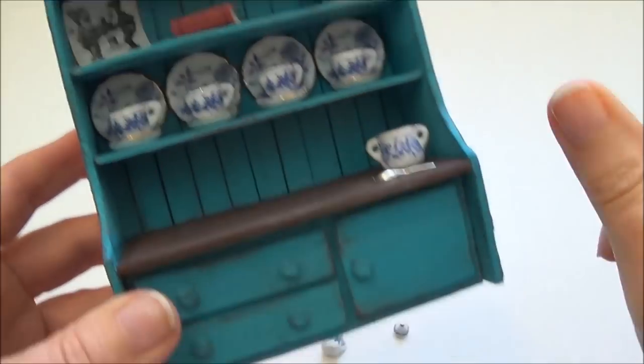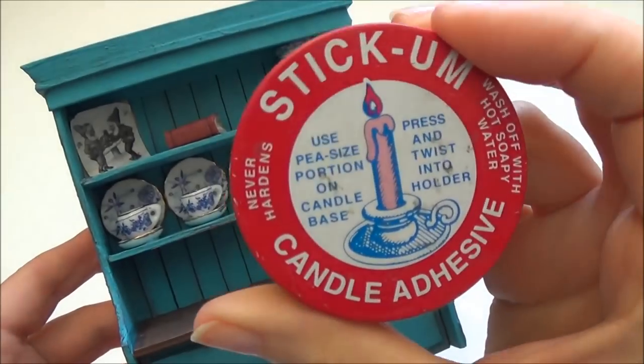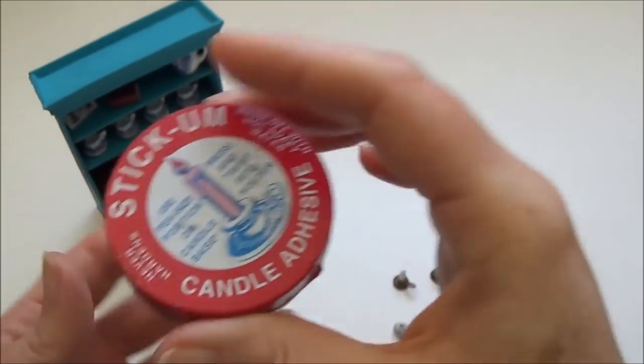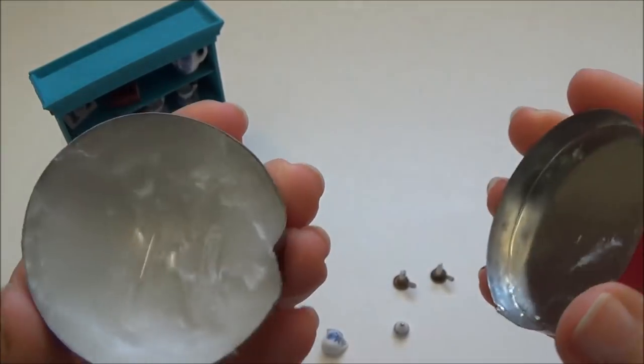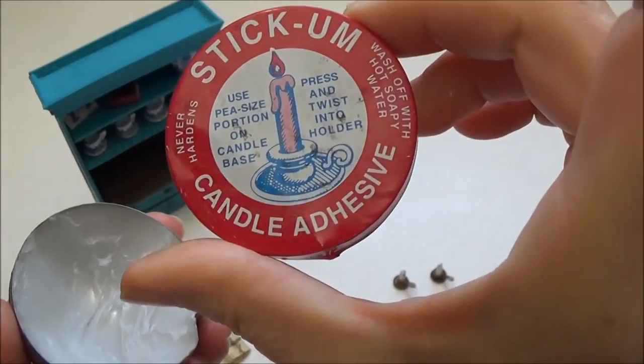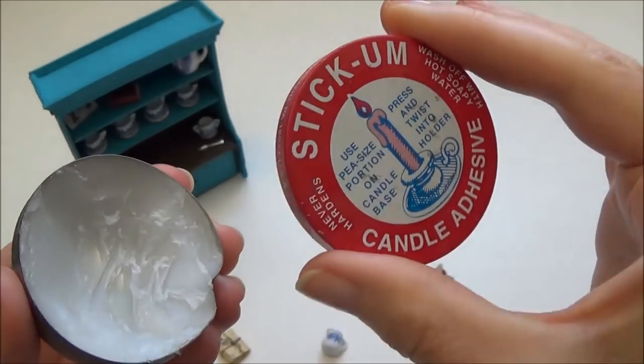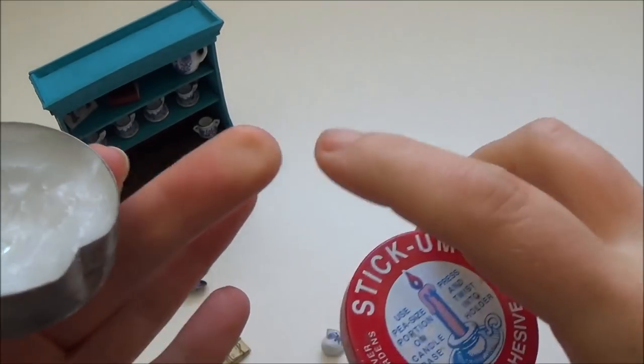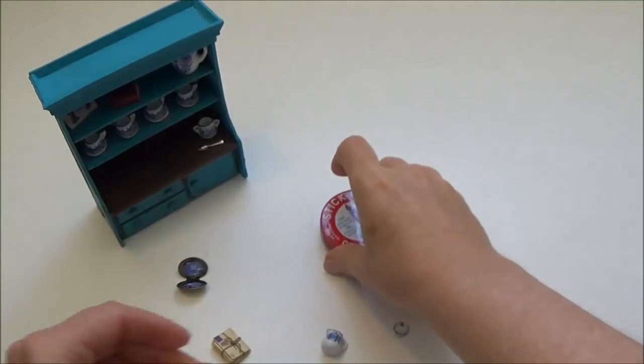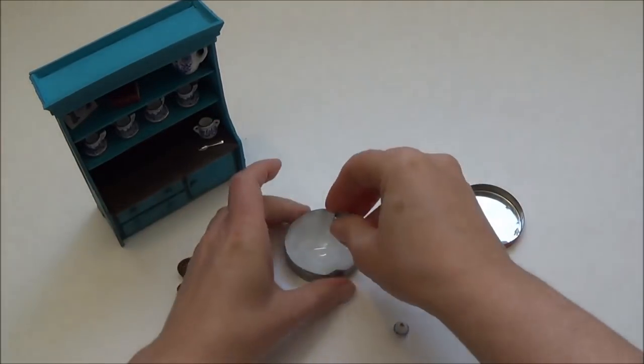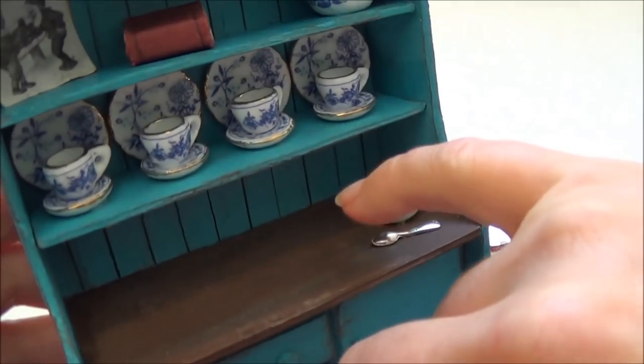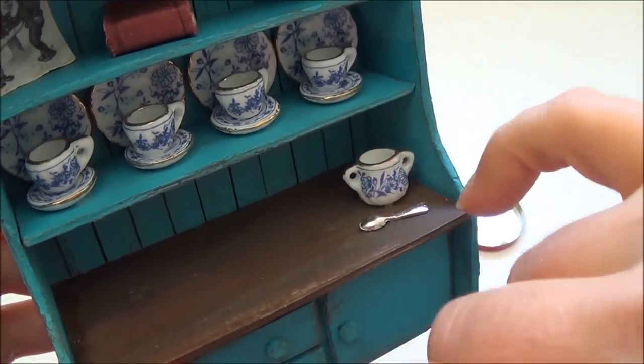So all these pieces here are being held in by a little bit of this stuff here. I found this in a thrift store, but I actually looked online just now and you can buy it on Amazon. It's for the bottom of candles, and you can wash it off with hot soapy water. It's like a sticky wax, and I use a little bit on the bottom of my dishes here.